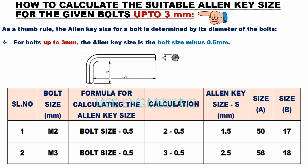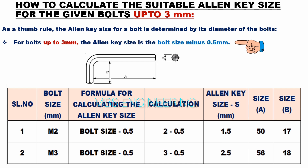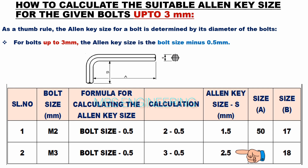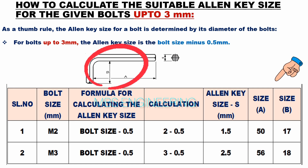Based on the given data and calculation, M2 bolts allen key size is 1.5 mm. For M3 bolts, the allen key size is 2.5 mm. Please also refer to the standard dimensions A and B for the allen keys.